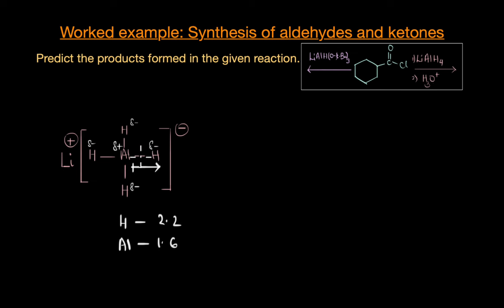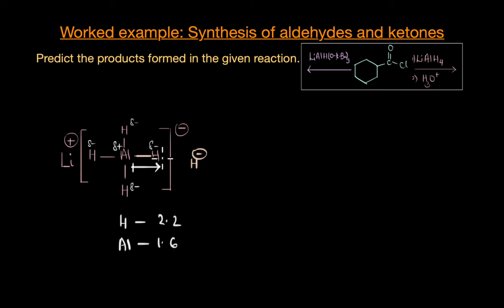So, even though the formal charge of aluminium is minus 1, the actual electron density distribution is different — the electron density is drawn closer to the more electronegative hydrogen atoms. The nucleophile here is the electron pair present in the Al-H bond, but for simplicity, we refer to the nucleophile as the hydride ion, because when this bond breaks, the hydrogen atom leaves with an electron pair, giving us a highly reactive and nucleophilic hydride ion.